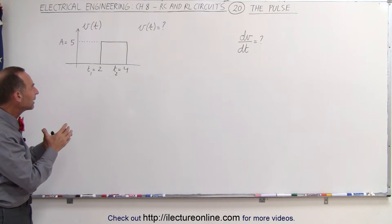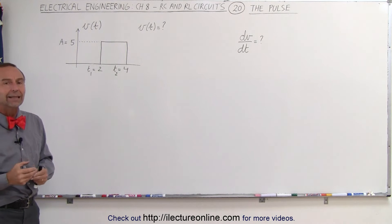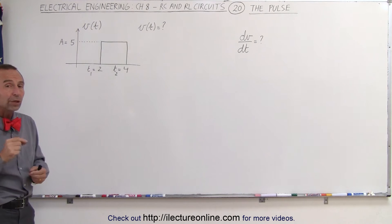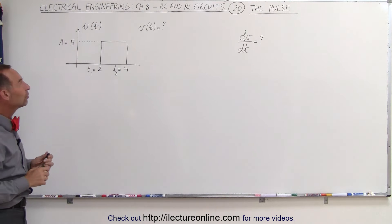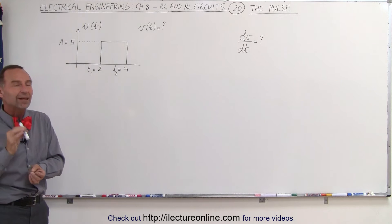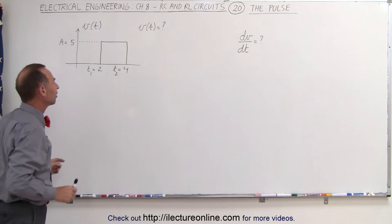How do we mathematically represent a pulse like that, an input pulse? We can do that with those functions that we just saw in the previous videos. In this case, we can use the unit step function to represent a single pulse.